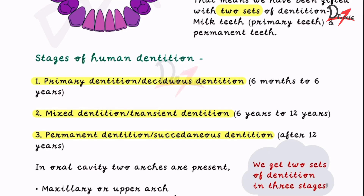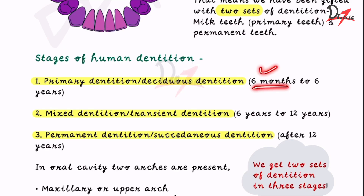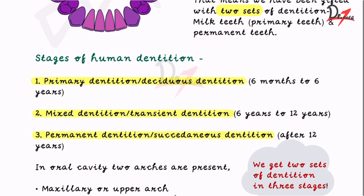Primary dentition is from six months to six years of age. Remember: the first milk tooth erupts at six months of age and the first permanent tooth erupts at six years of age. Mixed dentition period is between six years to twelve years. Permanent dentition is after twelve years, until the third molars erupt.